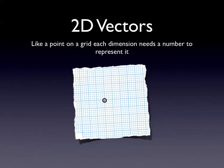The most basic vector is a 2D vector - just like a point on grid paper. You can think of a vector as an arrow or a direction. The arrow going to that point is the vector, which has two components: the X and the Y. Each component - the red and the green - is scalar, equivalent to a one-dimensional vector. Together they make up a two-dimensional vector.